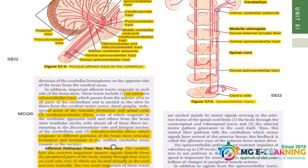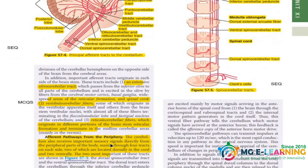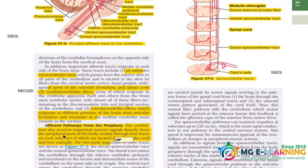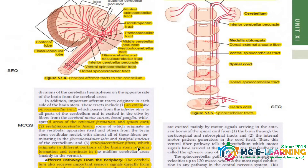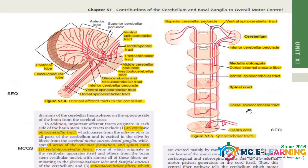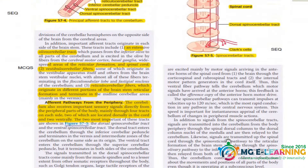All these tracts are very important. Coming towards the efferent pathways from the periphery, these are also very important — the spinocerebellar tracts, the dorsal and the ventral. This is also very very important as a SEQ. You have to read this from the blue box and draw this diagram, as the tracts are very important as a SEQ.